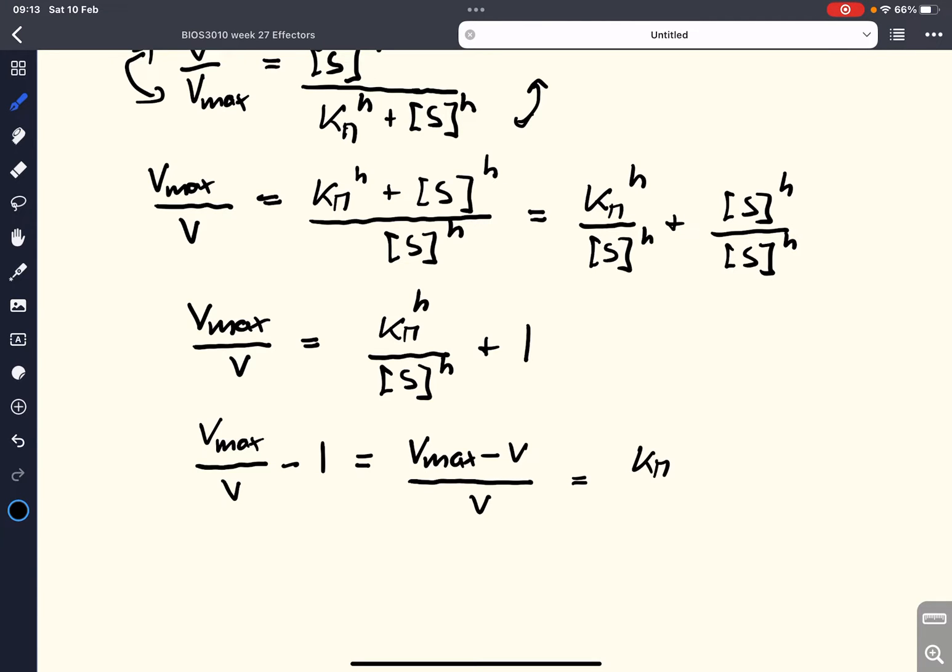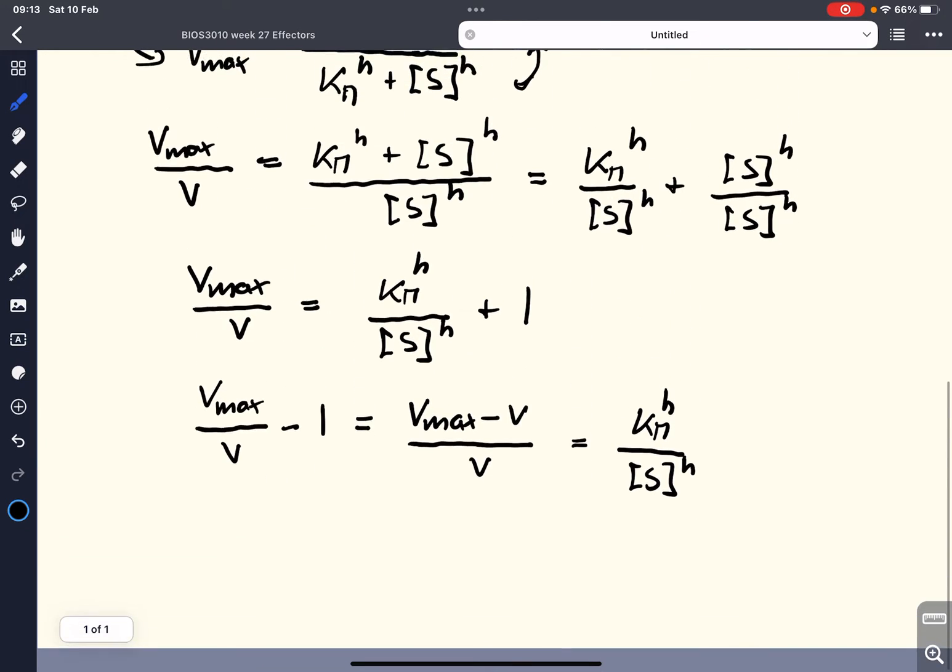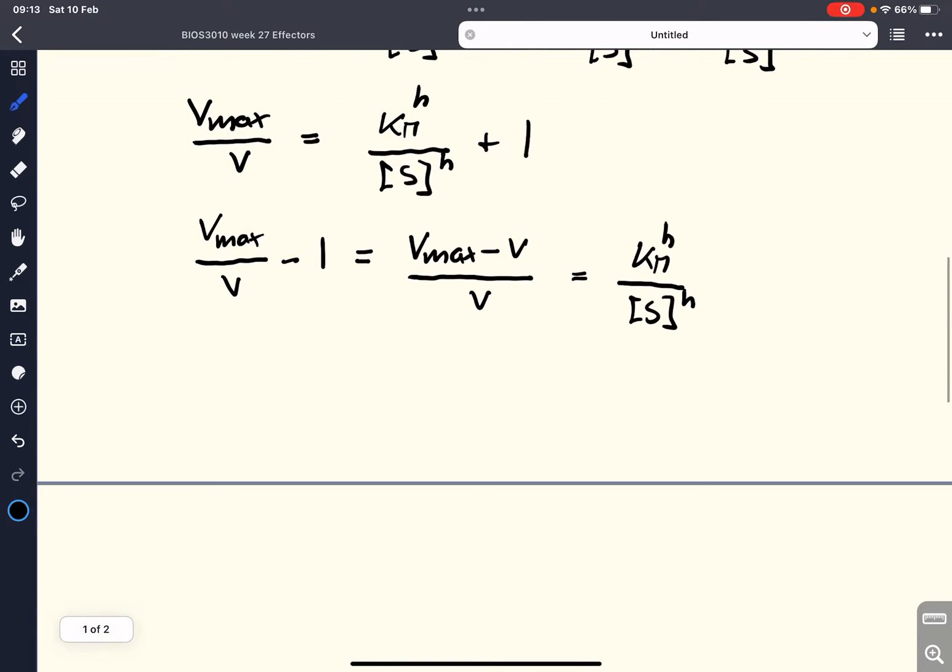And that is what we've got left on the right-hand side, that is Km to the power of H divided by S to the power of H. We do yet another inversion of this equation. And now we get V over Vmax minus V equals S to the power of H divided by Km to the power of H.